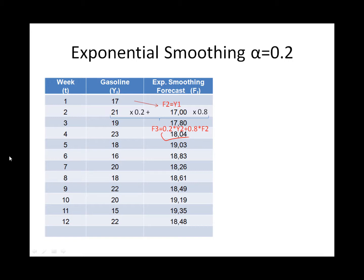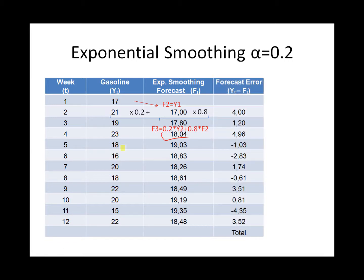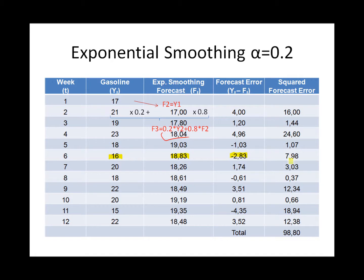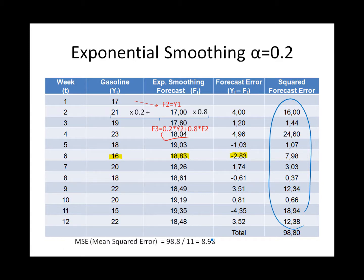In order to see the accuracy of our forecast, we need to see what is the difference between actual gasoline prices and our forecasts, which gives us the forecast error. We take the square of all these values to get the squared forecast errors. Since we have 11 values, to compare with other forecasts of various data sizes we find their average, which we call the mean square error. It equals 8.98 in this example.